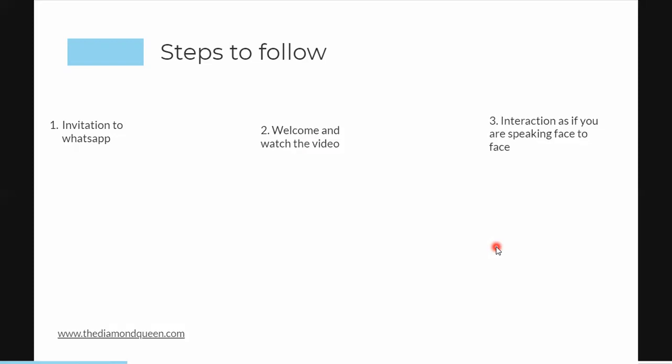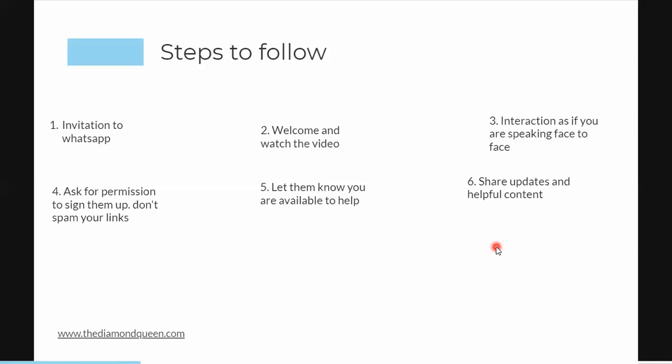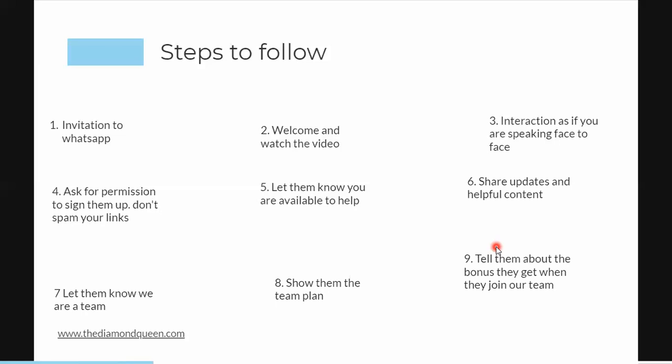Number two: how you welcome people so they can watch the video and interact as if you're talking to them face to face. Number four: ask for permission. Let them know you are valuable to help them — don't just share a post and hope they sign up. Share updates and helpful content. Number seven: let them know you work as a team. Number eight: show them the team plan and tell them about the bonus they get when they become part of your team. People are window shopping — like in a supermarket where they say buy one get one free, the shop offering something extra gets more customers. Come up with a bonus to offer your team members.